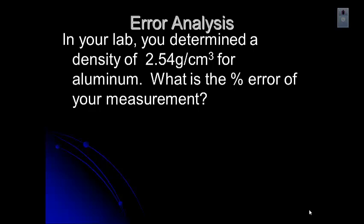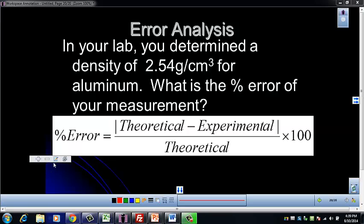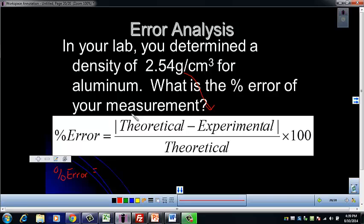Let's look at a couple of examples where we calculate our errors. In this one, you have determined a density for aluminum of 2.54 grams per centimeter cubed, and you're asked to find the percent error. Here's our formula. We know that percent error uses the theoretical value and the experimental value. The experimental value is what you determined in the lab; the theoretical value you would look up in your reference table. Pause the video if you need to and look at the front page to find the density for aluminum.